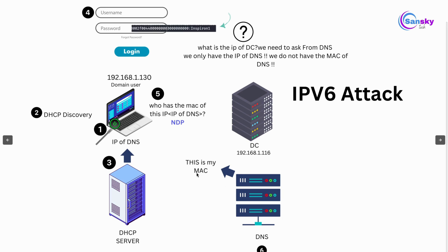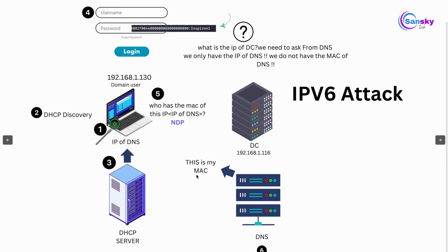For IPv4 this is done using ARP, but in this IPv6 scenario it is done by NDP — Neighbor Discovery Protocol. NDP is very similar to ARP but used for IPv6. With this protocol, the system asks who has the MAC address of the DNS server's IP, and the DNS server responds by giving its MAC address to the system.